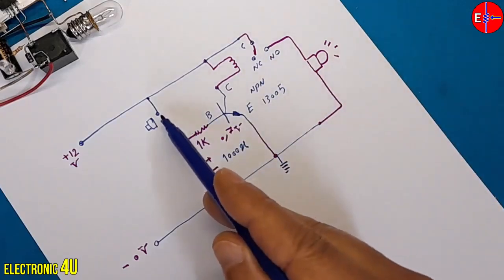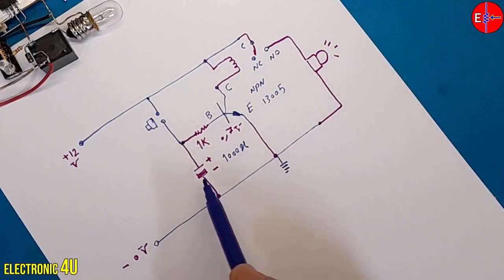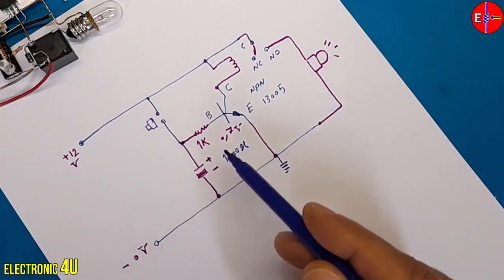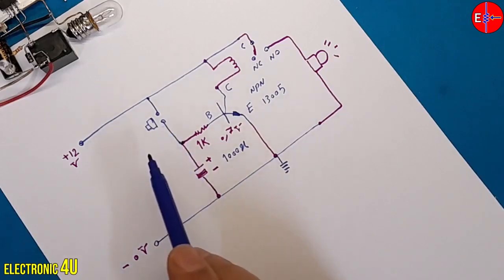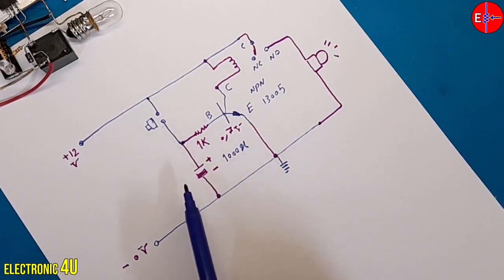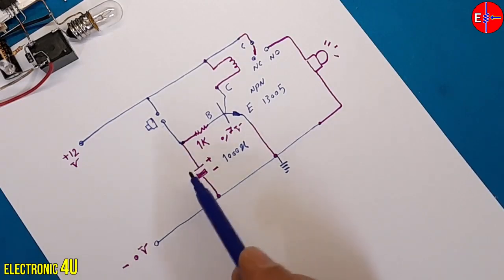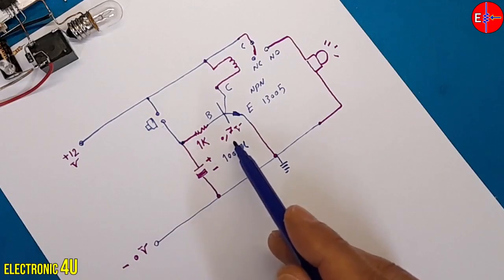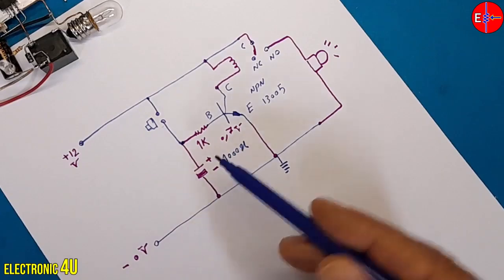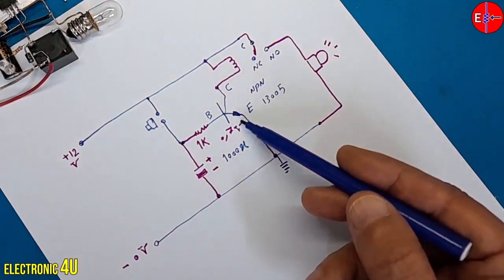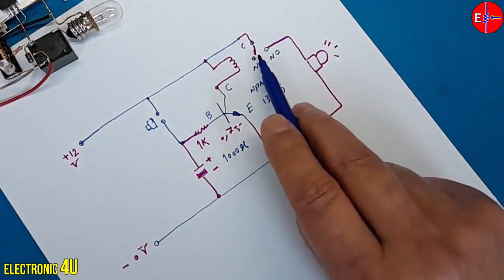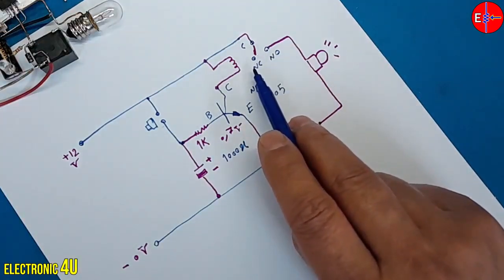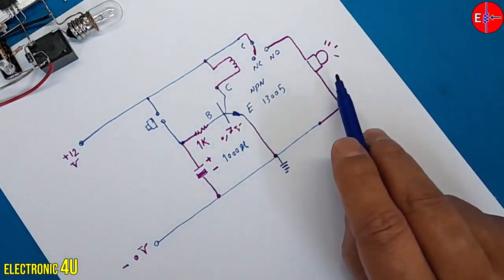By pressing the button, the capacitor on the base pin charges rapidly and reaches the voltage on the desktop power supply. When I remove my hand from the button, the capacitor no longer receives positive voltage, and the voltage stored in the capacitor slowly discharges until it drops below 0.7 volts. In this state, the transistor turns off. The relay coil deactivates. The connector returns to the normally closed terminal, and the lamp turns off.